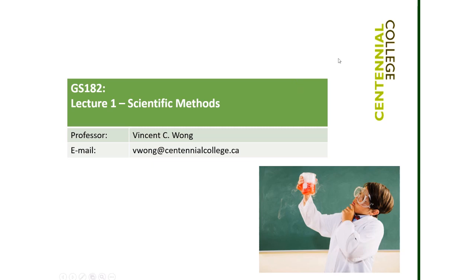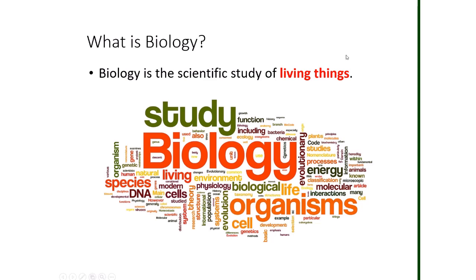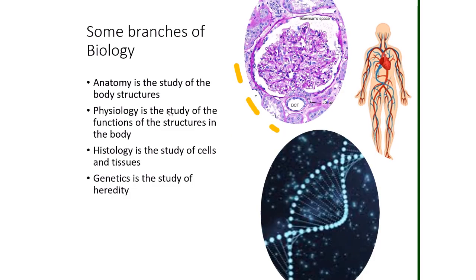This is introductory biology. Biology is the scientific study of living things. There are many different branches of biology. For example, anatomy is the study of body structures — essentially the names of the various body parts. Physiology is the study of the functions of structures in the body, basically how it works. This introductory biology course is going to be the prerequisite for your anatomy and physiology course next semester, where you'll learn the names of various body structures as well as how they work.